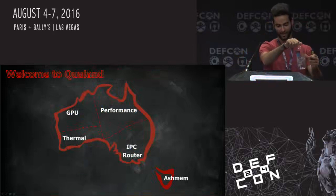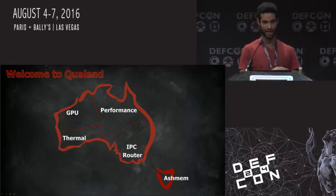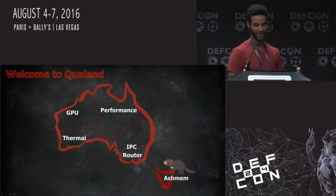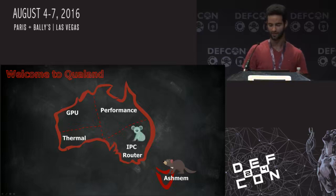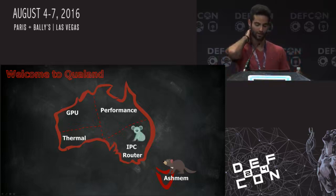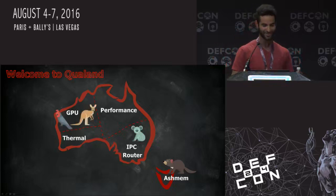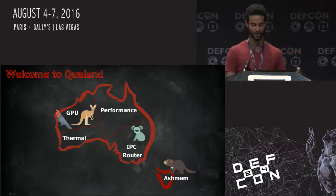Today I will be disclosing four new audio vulnerabilities, each one of them accessible for any unprivileged application on the device. The first one is Ashmanian Devil. The second one is Koala Root, which we already exploited. The third vulnerability is called Sinkoka Root. And the last one is Kanga Root.